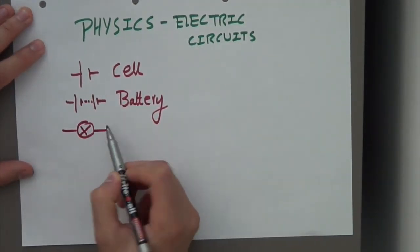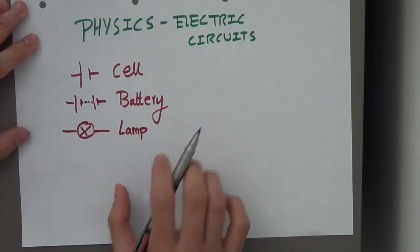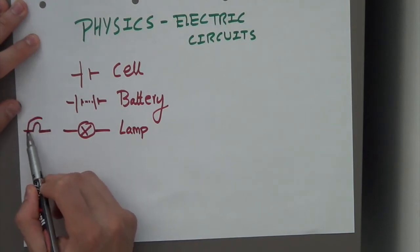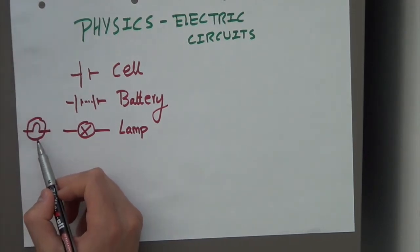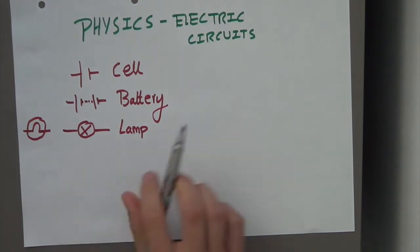Next one is a lamp or bulb. Depending on your textbooks or exam boards, you might see this symbol. This is the old symbol for a lamp, so just don't get confused. Either do mean a lamp, but this is the newer symbol.